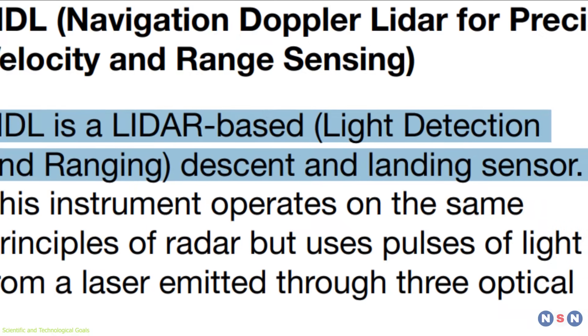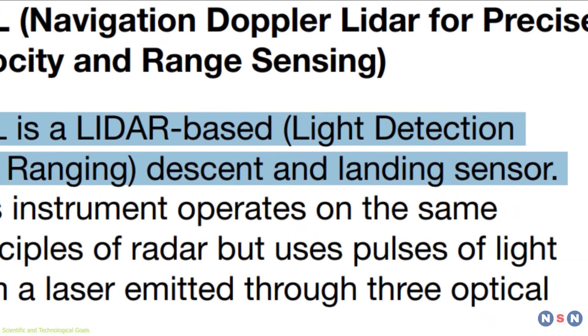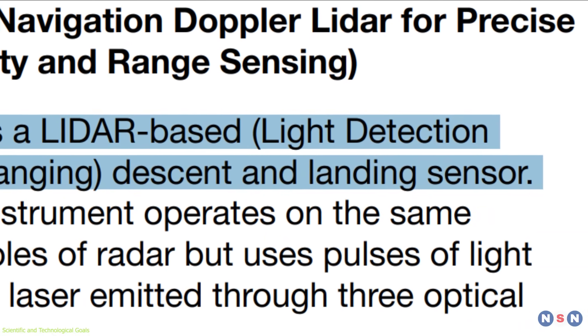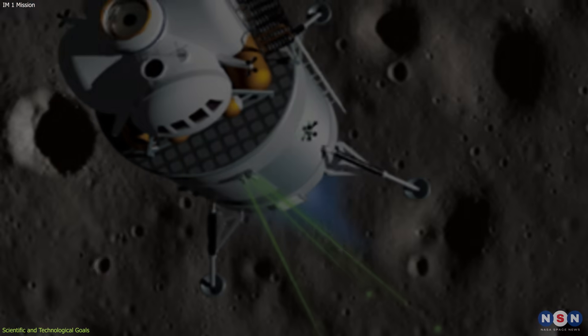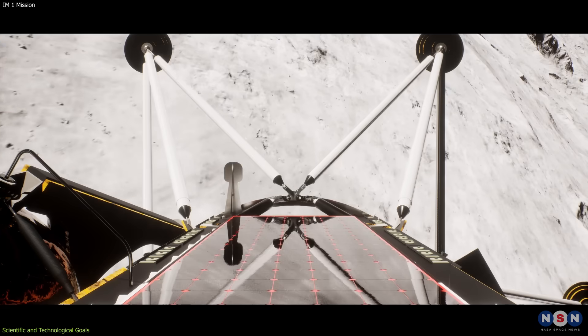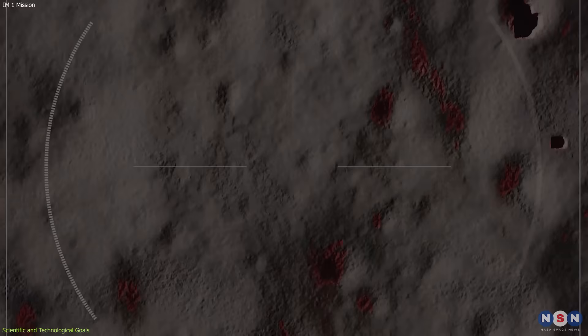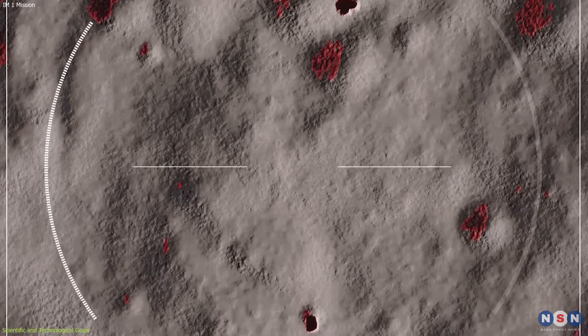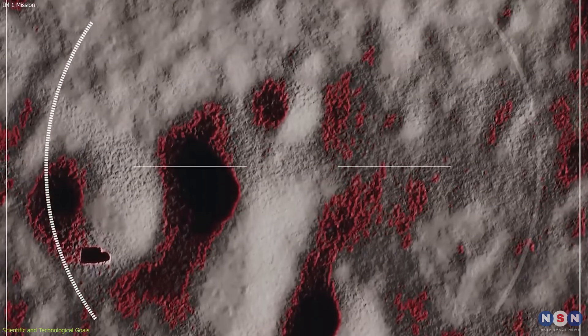The fourth one is NDL, or Navigation Doppler LIDAR for Precise Velocity and Range Sensing, a LIDAR system that will use laser pulses to measure the lander's velocity and range during the descent and landing phases. It will also provide high-precision navigation and hazard avoidance information for the lander.